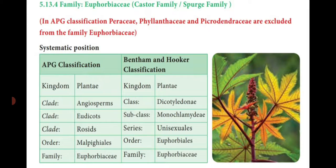The family Euphorbiaceae is known as the Castor family or Spurge family. According to APG classification, Peraceae, Phyllanthaceae, and Picrodendraceae are included from the family Euphorbiaceae. The systematic position: Kingdom Plantae, clade Angiosperm, clade Eudicot, clade Rosids, order Malpighiales, family Euphorbiaceae. In Bentham and Hooker classification: Kingdom Plantae, class Dicotyledonae, subclass Monochlamydae, series Unisexuales, order Euphorbiales, family Euphorbiaceae.